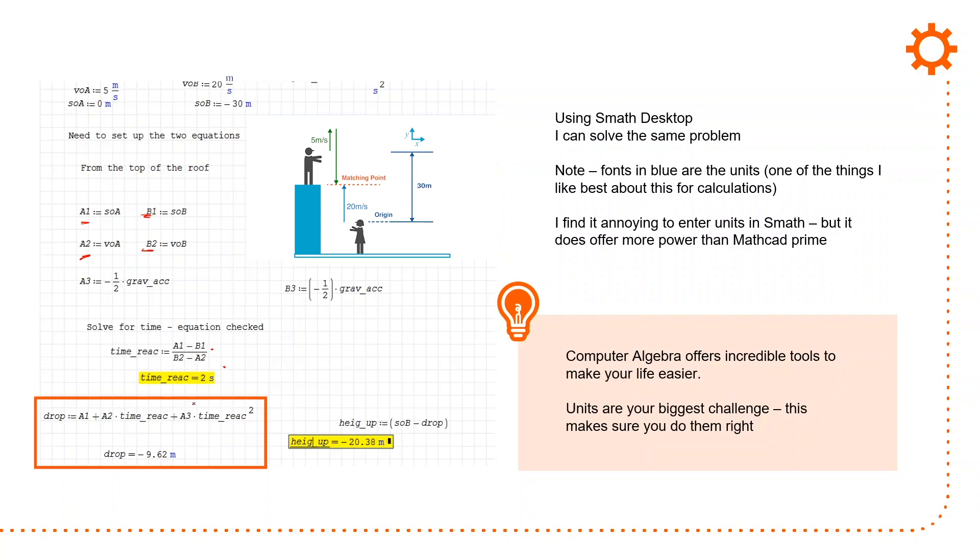So what's interesting here is I can do this calculation in unit values. So 5 meters per second, that's 20 meters per second, minus 30 meters, and 0 meters. So I've set everything up. And I end up with the drop, minus 9.62, and the height for the bottom, minus 20.38 meters.